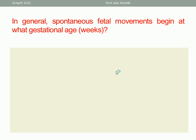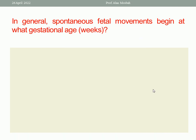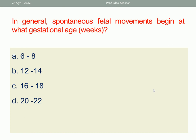Next question: In general, spontaneous fetal movement begins at what gestational age in weeks? Options: 6 to 8 weeks, 12 to 14 weeks, 16 to 18 weeks, or 20 to 22 weeks. 16 to 18 weeks is the best one response.